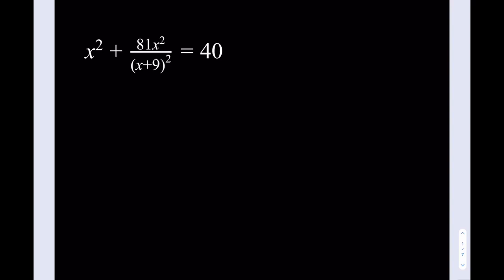Hello everyone, in this video we're going to be solving an equation. We have x squared plus 81x squared divided by x plus 9 squared is equal to 40. So I'll try to present two methods here.